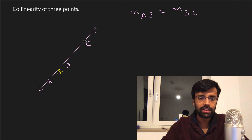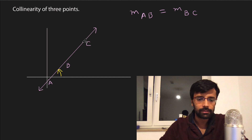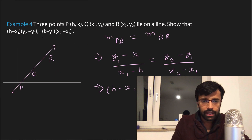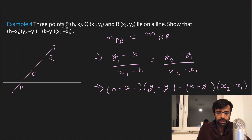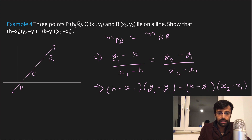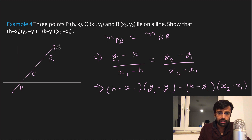Let's see this in an example. Three points P(H, K), Q(X1, Y1), and R(X2, Y2) lie on a line. So this is our straight line with three points: P, Q, and R.